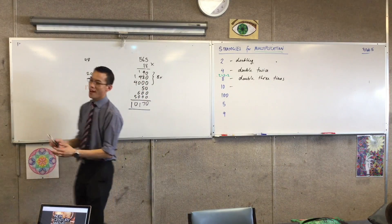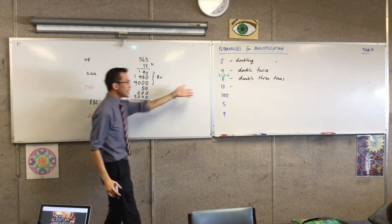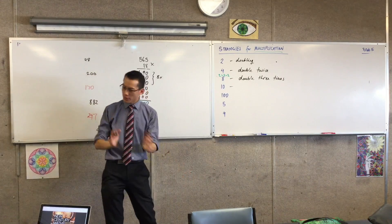Okay, fantastic. So 2, 4 and 8, they're kind of like a little family together. When we get to 10, we're going to go in a different direction.